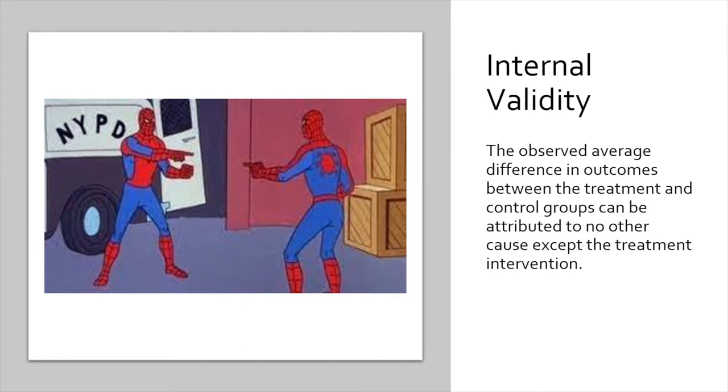There are a couple of other terms I want to introduce. The first is internal validity — within the experiment and the population involved, the observed average difference in outcomes between treatment and control groups can only be attributed to the treatment intervention. This is that causal relationship within the study. Essentially, if you have a good randomization procedure and a comparable experience between treatment and control groups, we can attribute whatever differences we see in outcomes to just the differences in what the groups experienced.